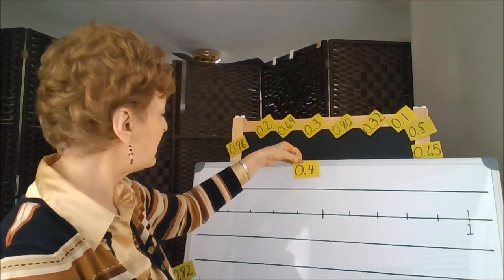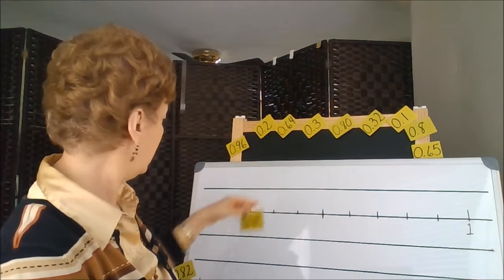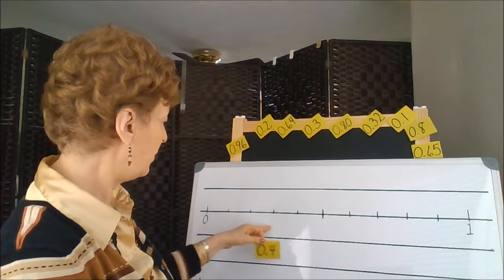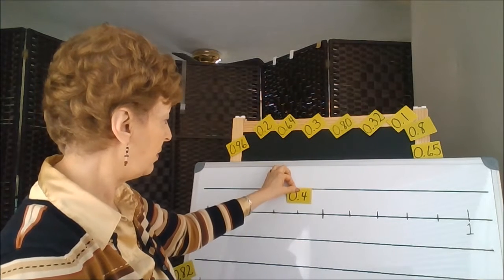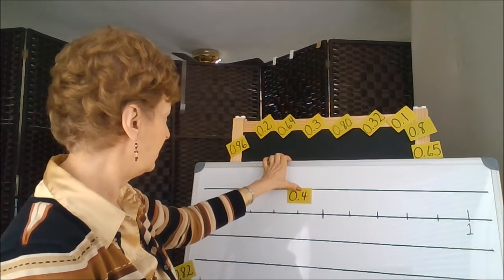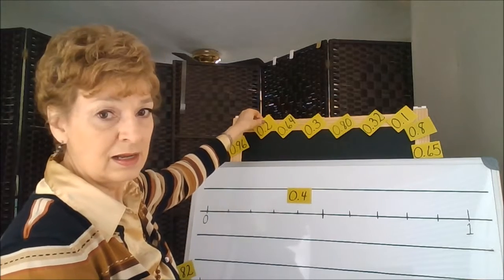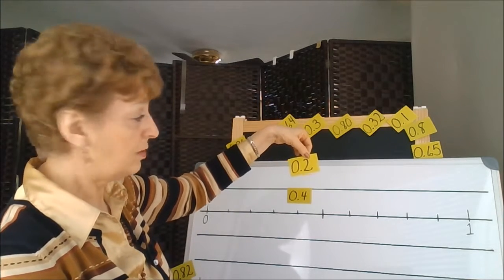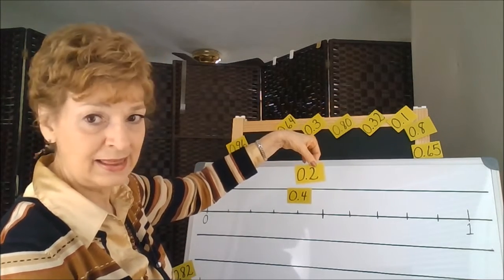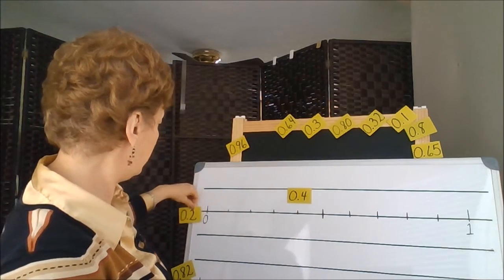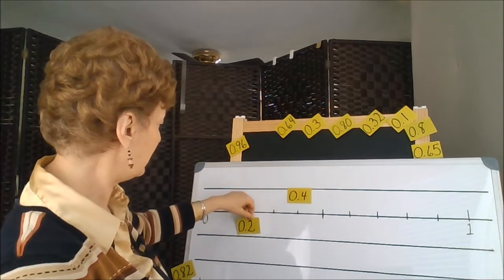So in this case, 0.04 would be four jumps over: 1, 2, 3, and 4. It would be placed here. 0.2, 2 tenths, this is in the tenths position, would be two jumps over: 1 and 2.